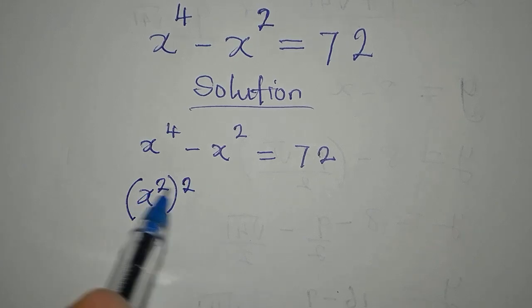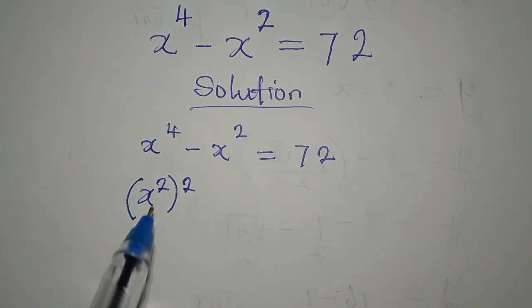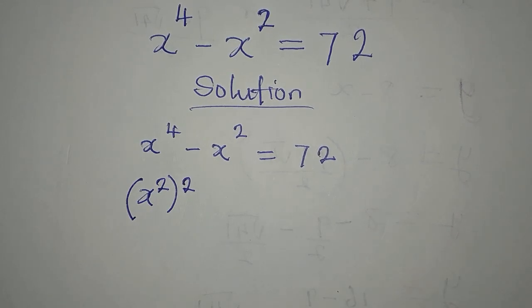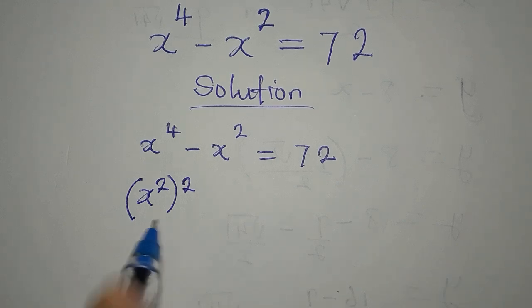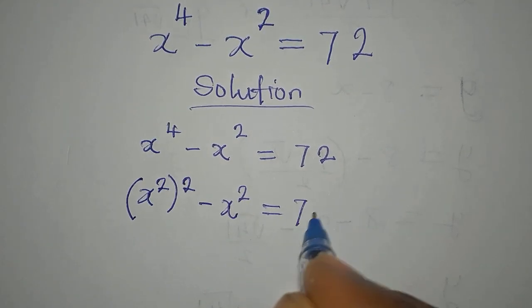Because if you open the bracket, you will have x to the power of 4 back, since we can multiply the powers. According to one of the laws of indices, then we have minus x to the power of 2 equals 72.